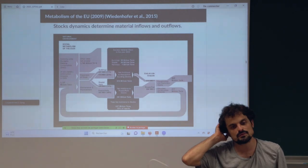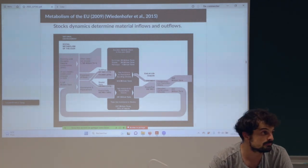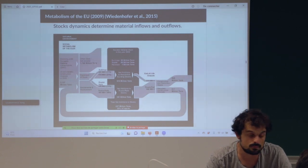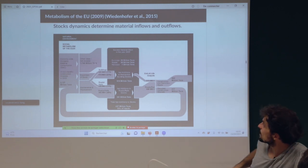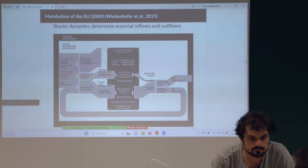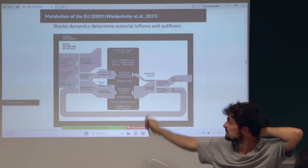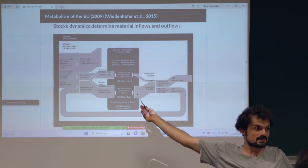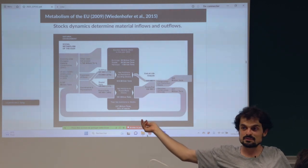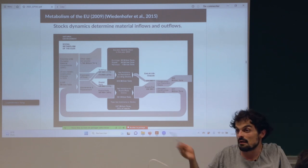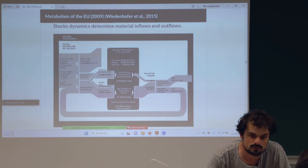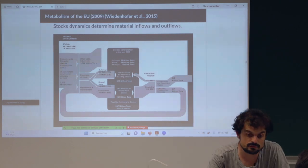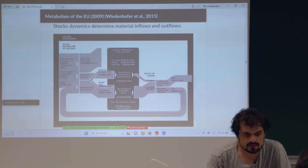Why are stocks really important? Because we need to maintain them, we need to repair them all the time — every road, every building, every bridge. Here is an example for the metabolism of the European Union in 2009, taking into account buildings, roads, and railways — three types of stocks. Roads are more important than buildings: roads in the EU represent 39 billion tons and buildings 35 billion tons — it's close but roads are heavier.